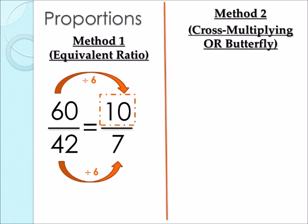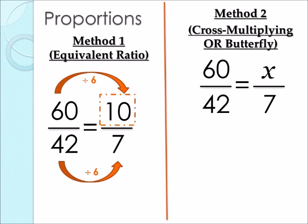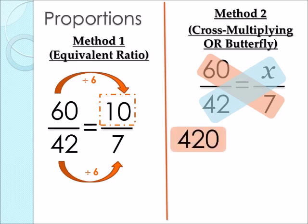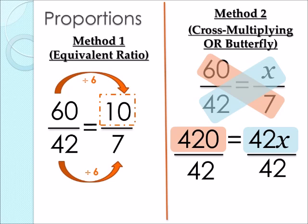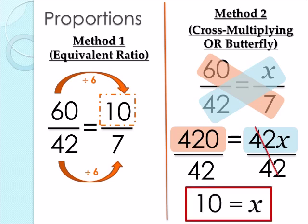Our next method is called the cross-multiplying or butterfly method. We have the same fractions. Instead of finding an equivalent ratio, we are going to cross-multiply — multiplying the numbers across from each other. So we do 60 times 7 and 42 times x. 60 times 7 gives us 420, equal to 42x. To solve, we use inverse operations and divide both sides by 42. The 42s cancel out, and 420 divided by 42 gives us 10. So our answer is x equals 10 — the exact same answer as the first method.